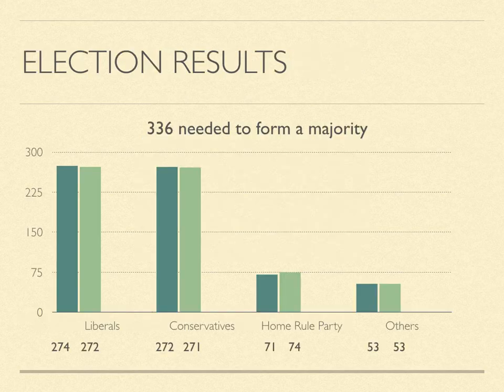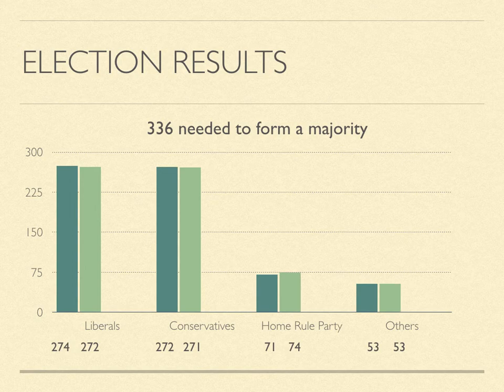When the votes came in, the Liberals had won 274 seats and the Conservatives and Unionists had won 272 seats, and John Redmond's Home Rule Party held the balance with 71 seats. They held another election in December 1910 but it was essentially the same result. Whoever wanted to take power would need Home Rule support to form a government, and the price of their cooperation was Home Rule.